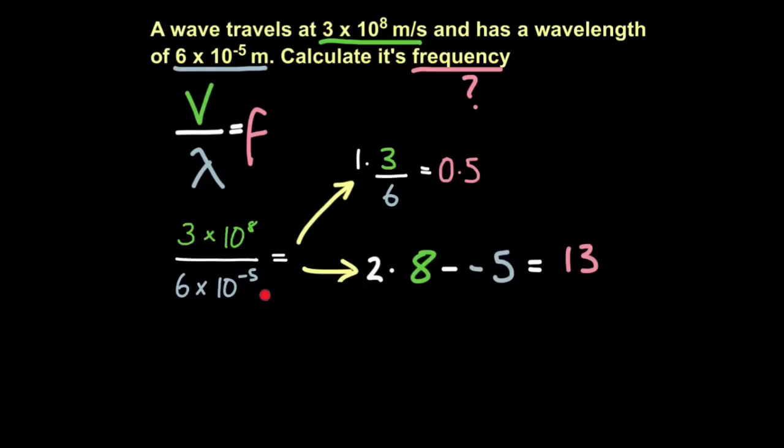Step 2, subtract the powers. So 8 minus minus 5. And if you subtract a negative number, it's the same as adding the numbers together. Just think those two negative lines can form a positive. So that will give you the power of 13. 10 to the power of 13.